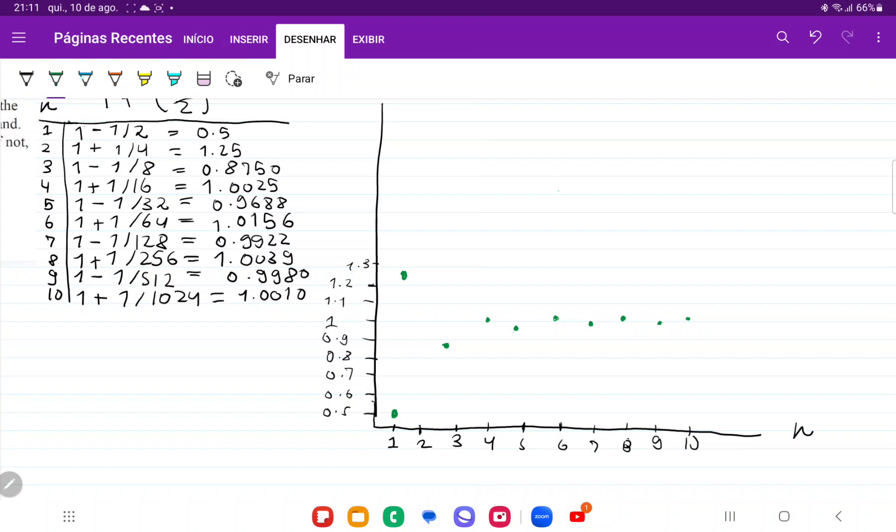And we can clearly see here that these values, even though they oscillate from down to up, down to up, they're getting constantly closer and closer to this line here, which is the line 1. So we can see here graphically that the limit is 1, because as we add more terms, they get closer and closer to 1.